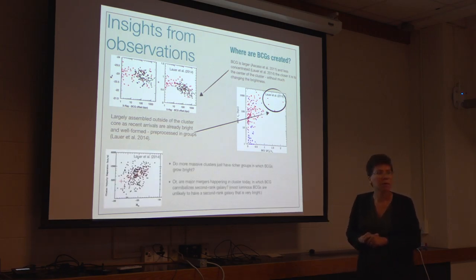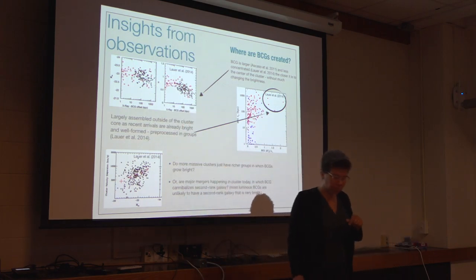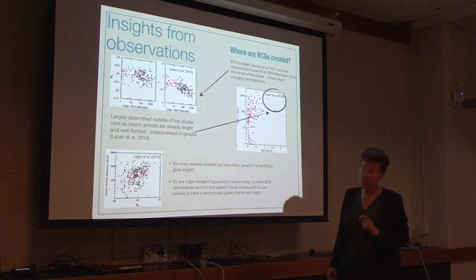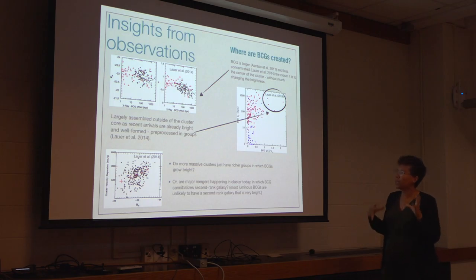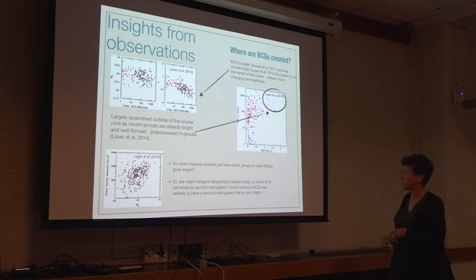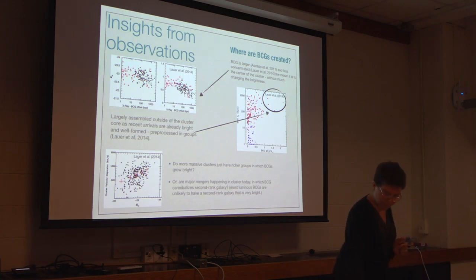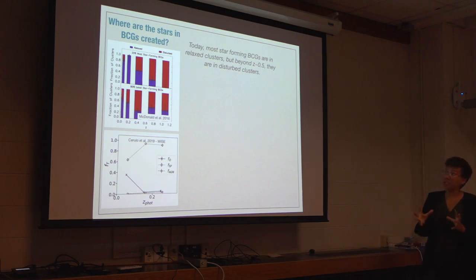How do you define the center? How do you know they are far from the center? These are X-ray measurements, and this study here is X-ray. We could ask: do more massive clusters just have richer groups in which BCGs initially grow? Or are major mergers happening in a cluster today in which the BCG cannibalizes a second-rank galaxy that was the BCG of some other cluster previously? So that's where the BCGs are assembled.